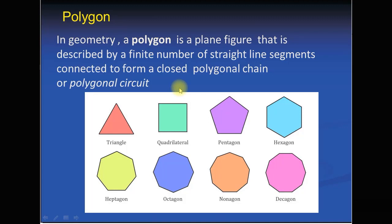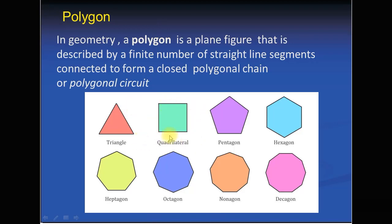Dear students, first of all note that there are different types of polygons. Before discussing the different types, let me tell you about the definition of a polygon. In geometry, a polygon is a plane figure that is described by a finite number of straight line segments connected to form a closed polygonal chain or polygonal circuit. These are all polygon types — for example, a triangle.